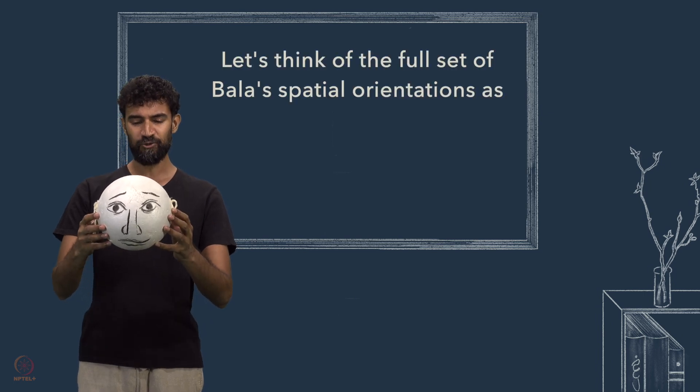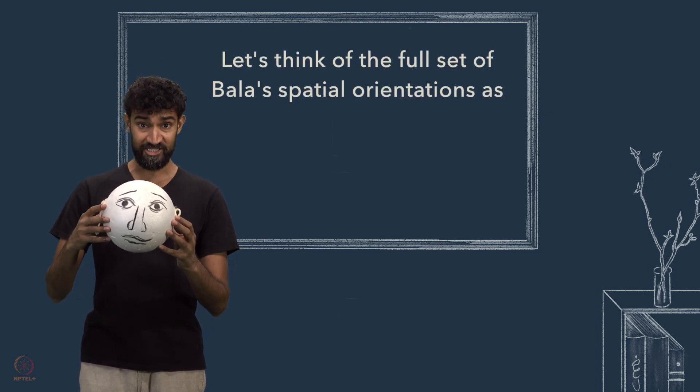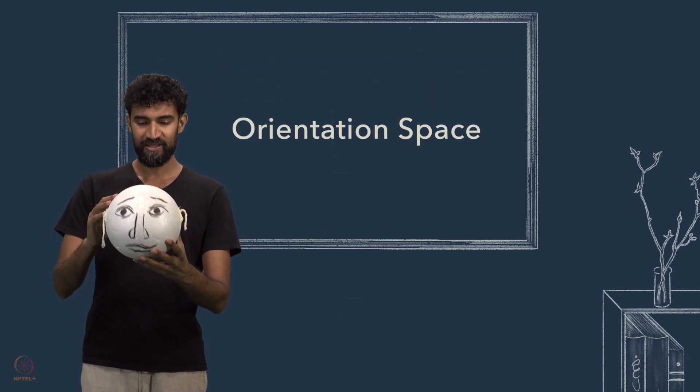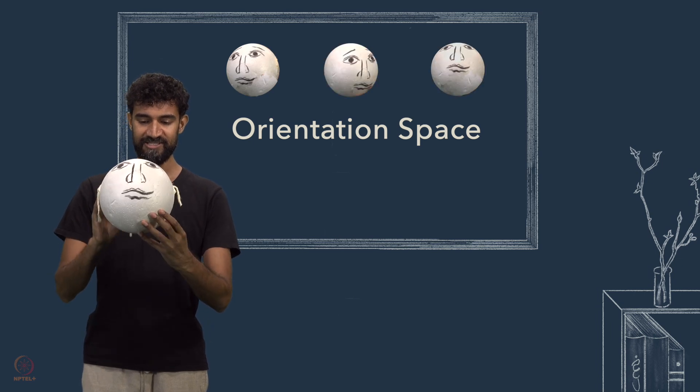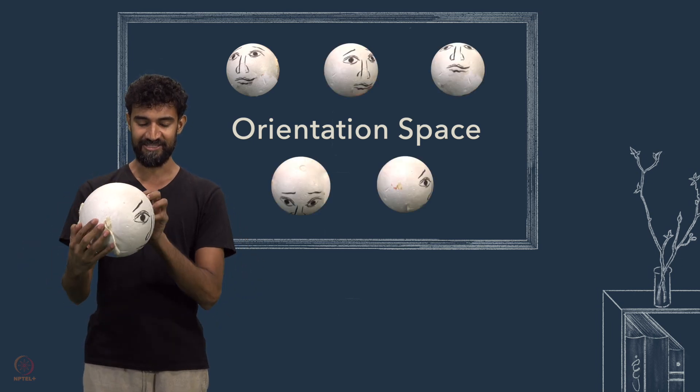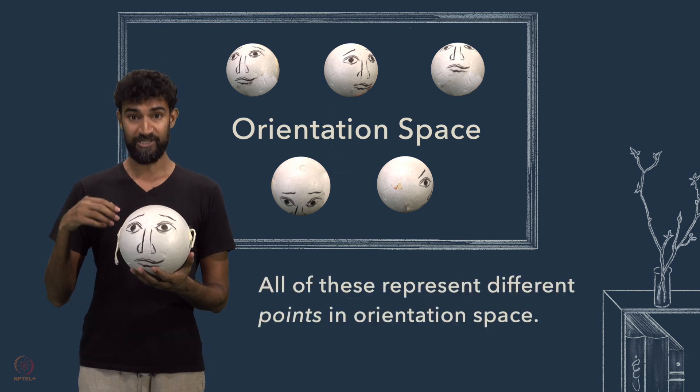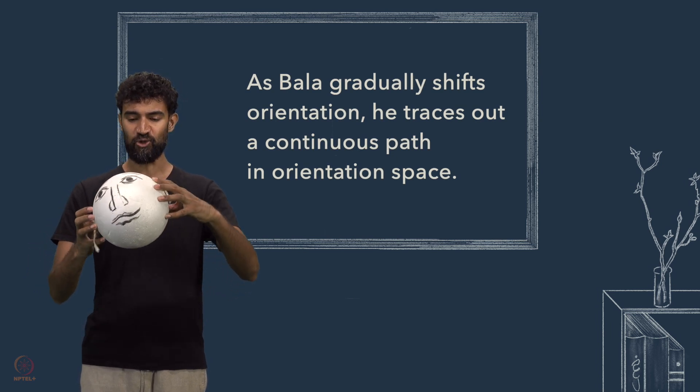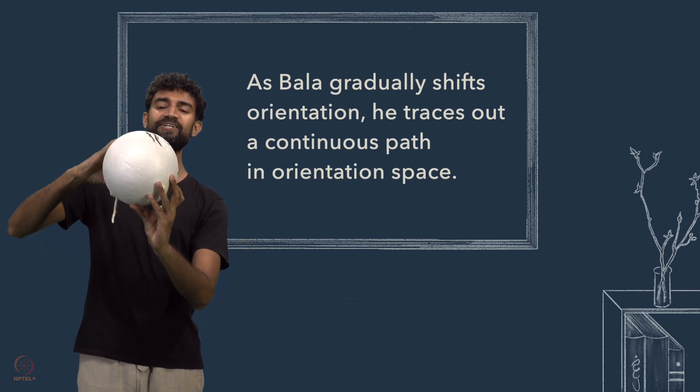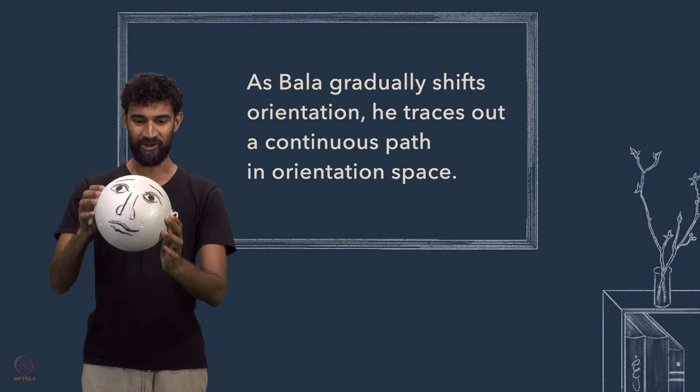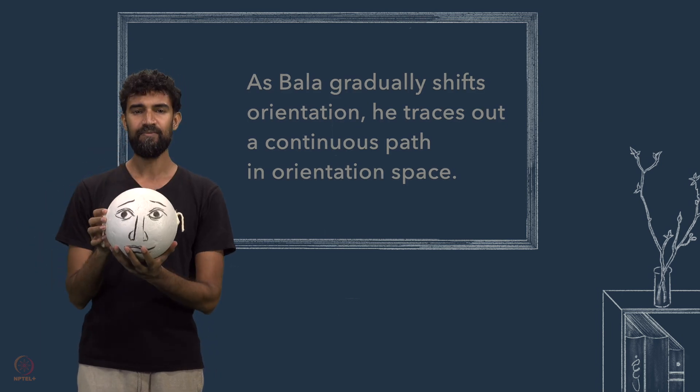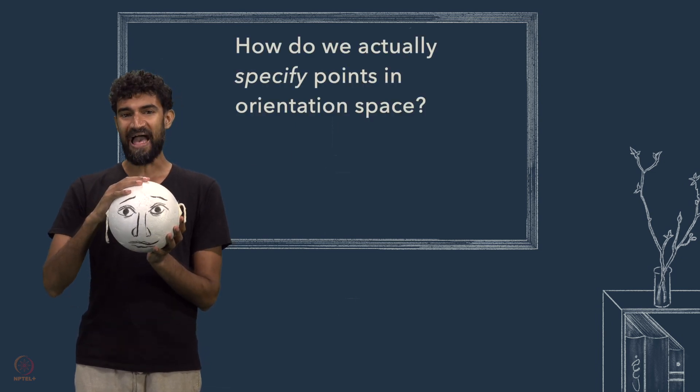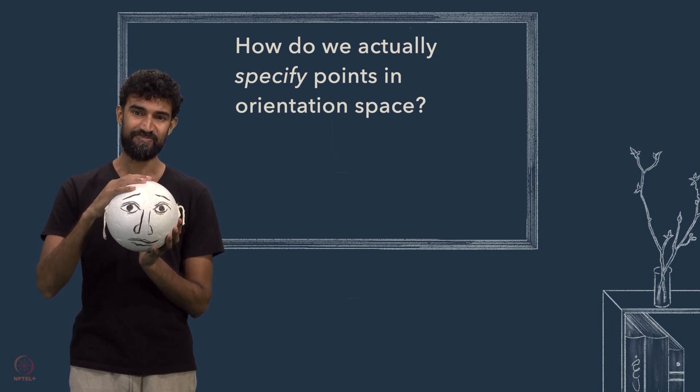Let's think of the full set of Bala's orientations as orientation space. So, this, this, this, this, and this all represent different points in orientation space. And as Bala gradually shifts spatial orientation, he traces out a continuous path in orientation space. But, this brings up a major question. How do we actually specify points in orientation space?